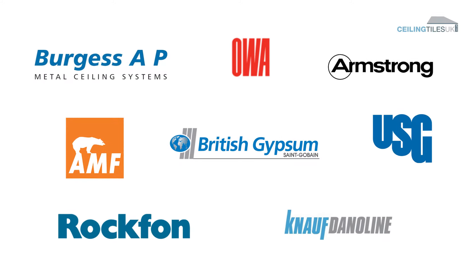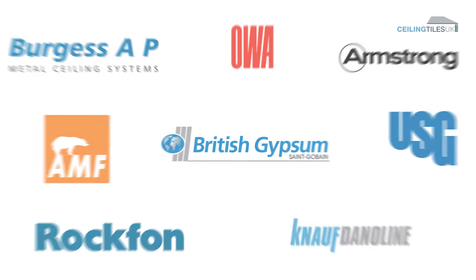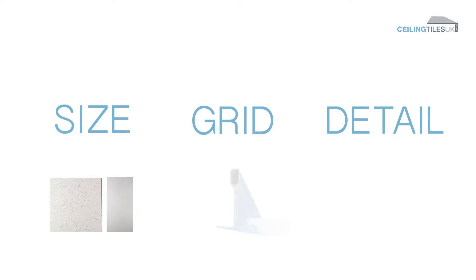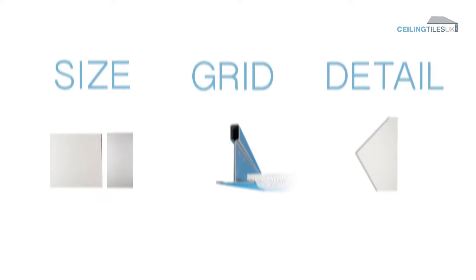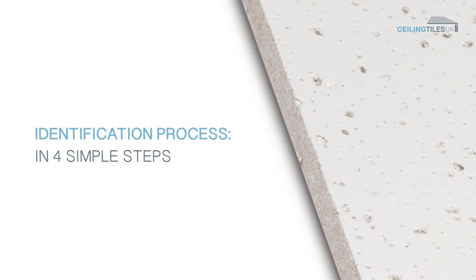Different manufacturers of suspended ceiling tiles produce very similar looking products. This can make them notoriously difficult to identify, especially when looking to match your existing ceiling tiles. Each ceiling tile is often made in a variety of different combinations, including size, grid and edge detail, which add even further challenges to the identification process. Through our many years of experience, Ceiling Tiles UK have put together a few help tools to guide you through the process.